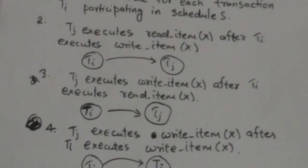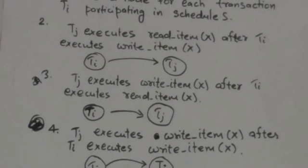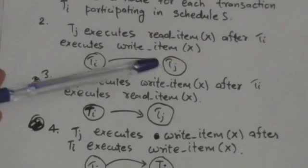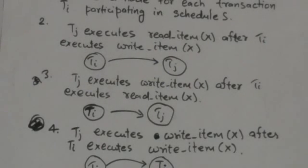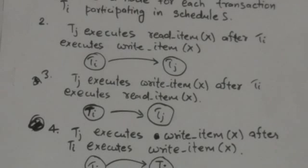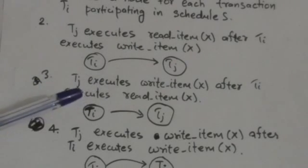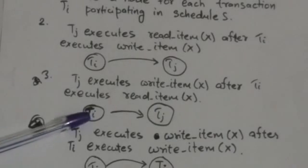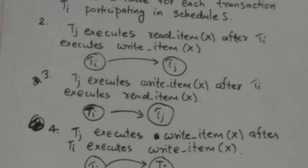The third step is: for each case in schedule S where transaction TJ executes a write item X operation after transaction TI executes a read item X operation, we will create an edge in the precedence graph from node labeled TI to node labeled TJ.